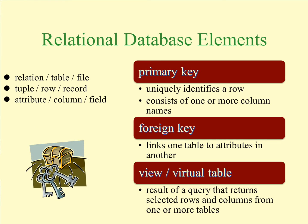The elements of a relational database: the relation is also called a table or a file. Tuples are the rows, and attributes are the columns. A primary key uniquely identifies a row and consists of either one or more columns. The foreign key links one table to attributes in another. A view or virtual table is the result of a query that returns selected rows and columns from one or more tables.